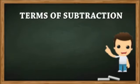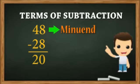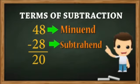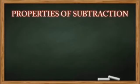Children, do you know the terms used for the numbers in subtraction? The number from which a number is subtracted is called the minuend. The number that is subtracted is called the subtrahend. And the answer we get after subtraction is called the difference.